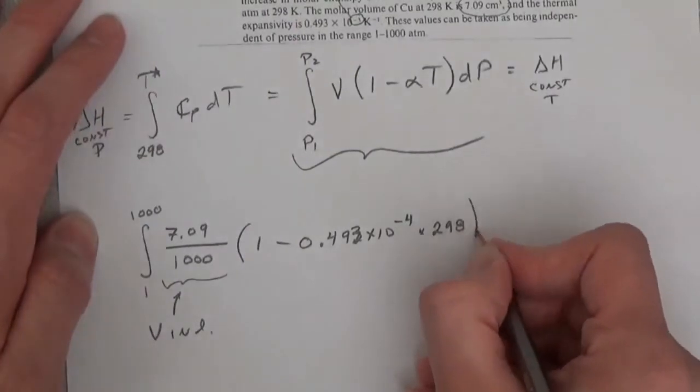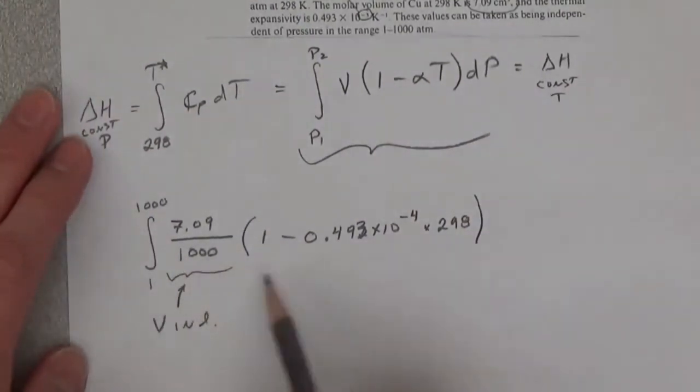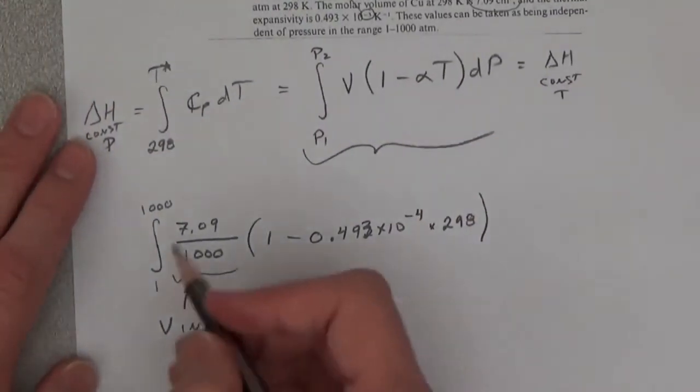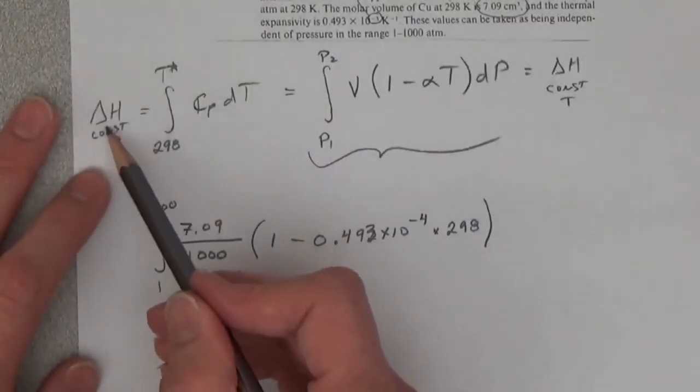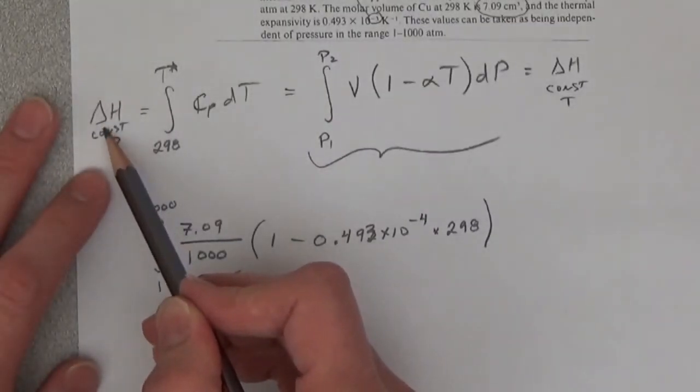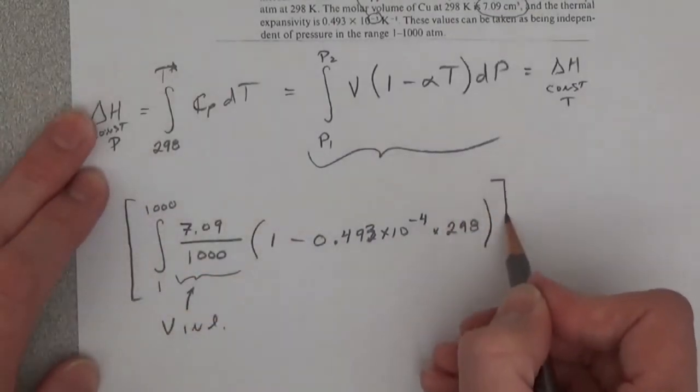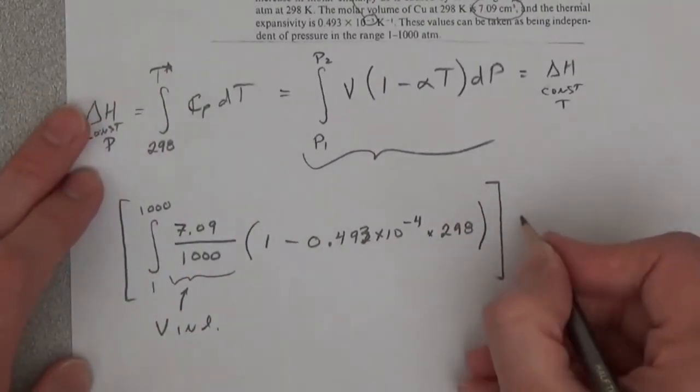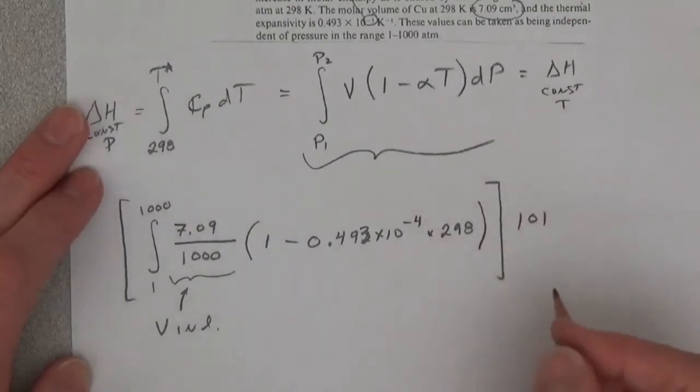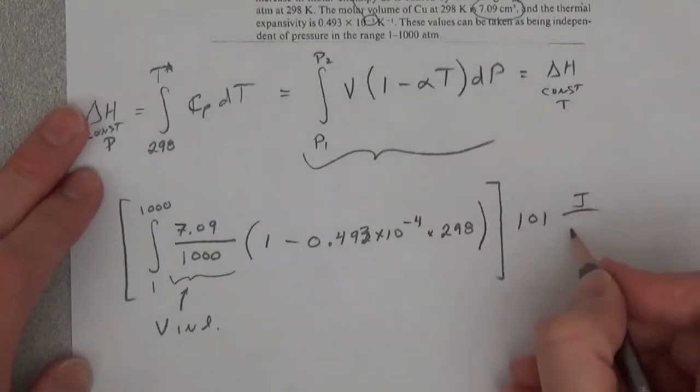And then all of this is giving us liter atmospheres. And because we're working in joules per mole, then this has to be times 101 joules per liter atmosphere.